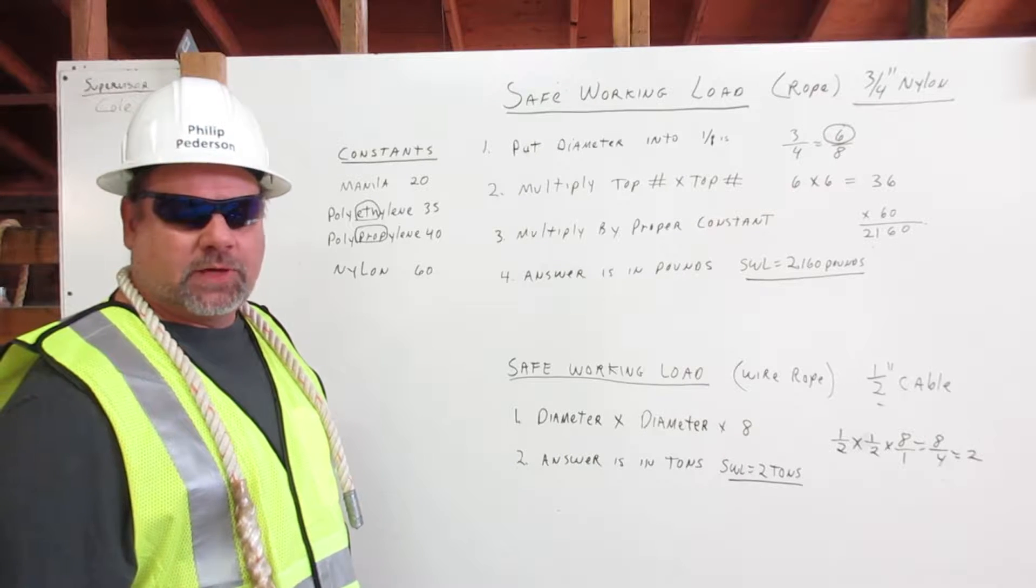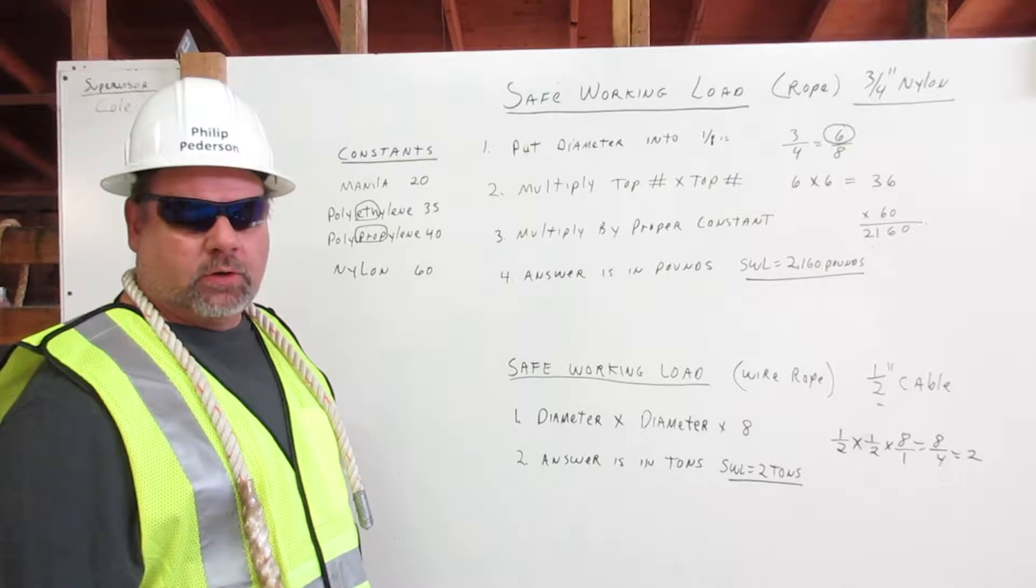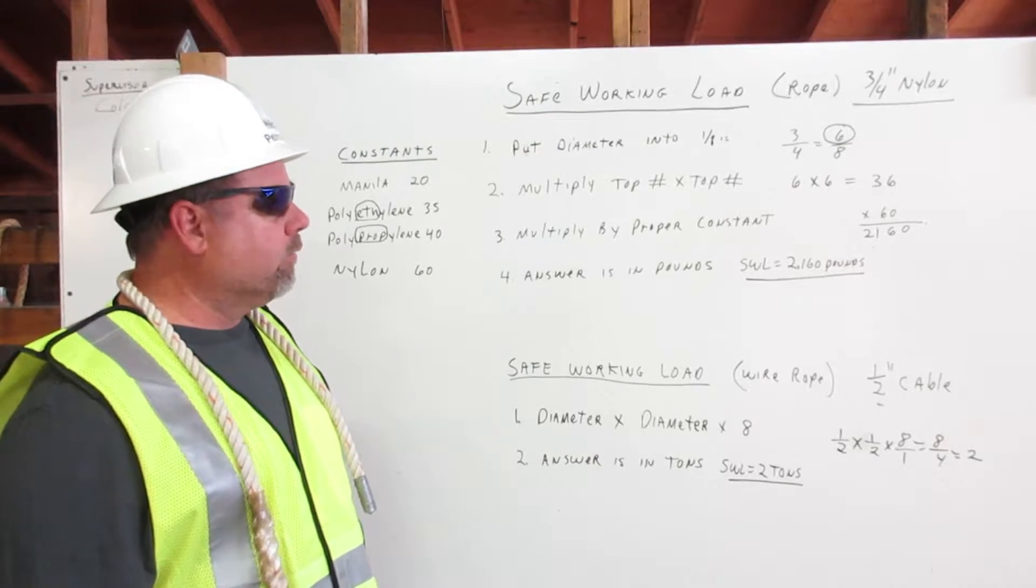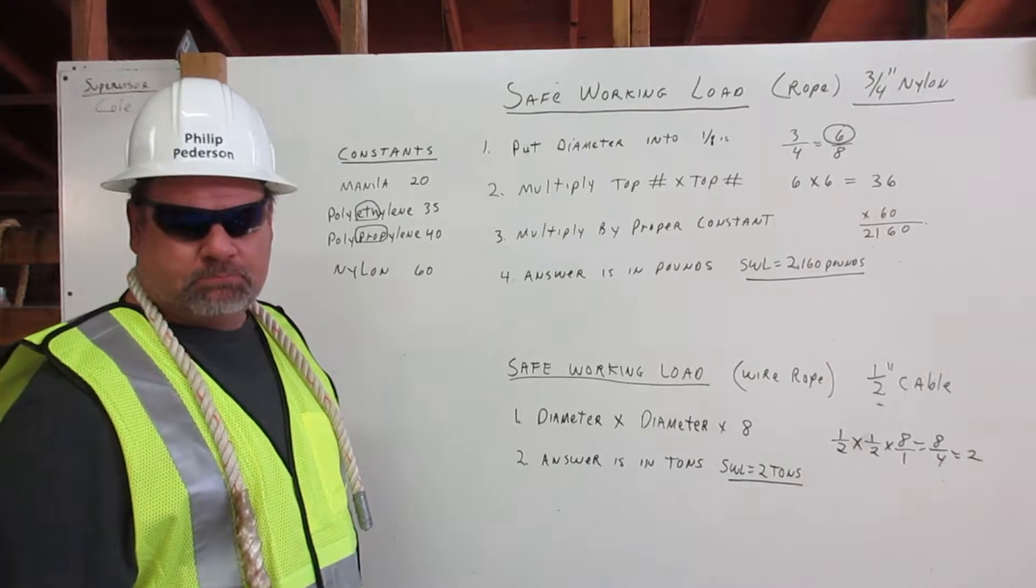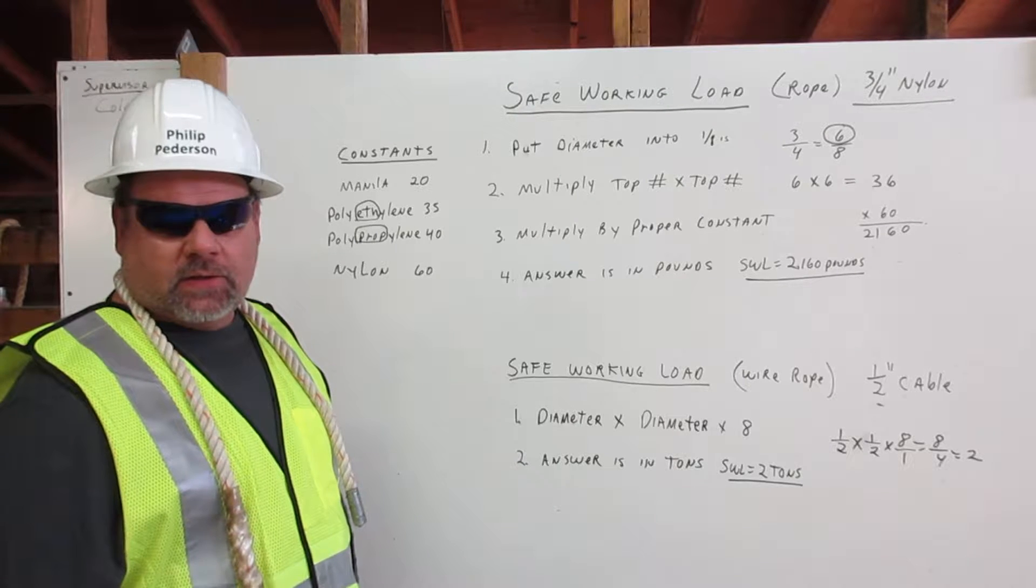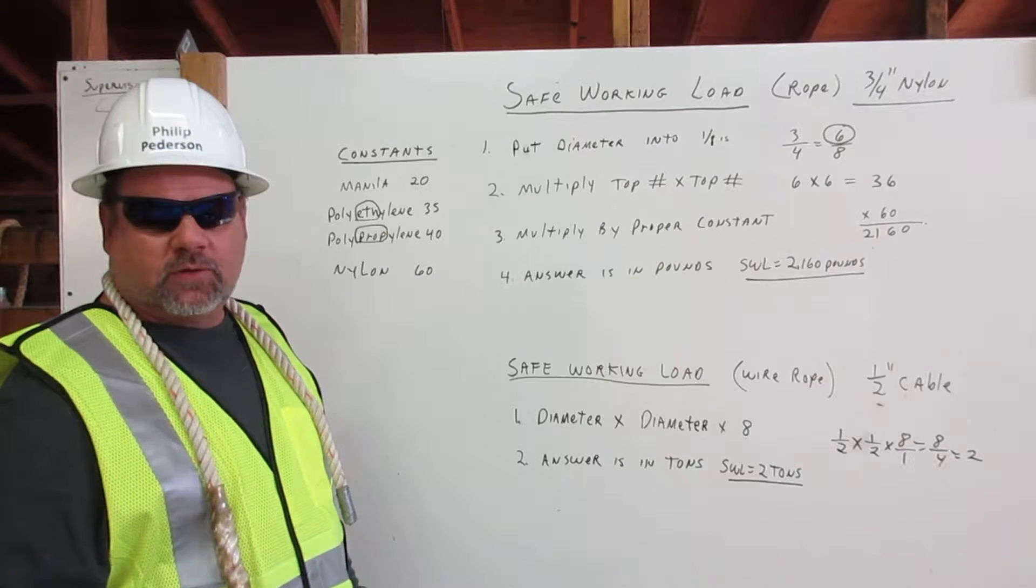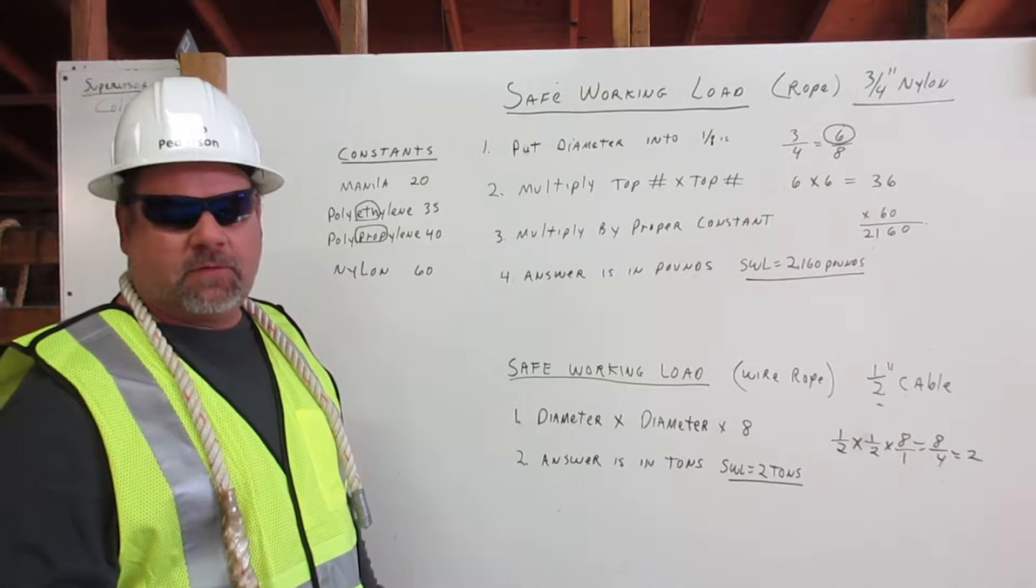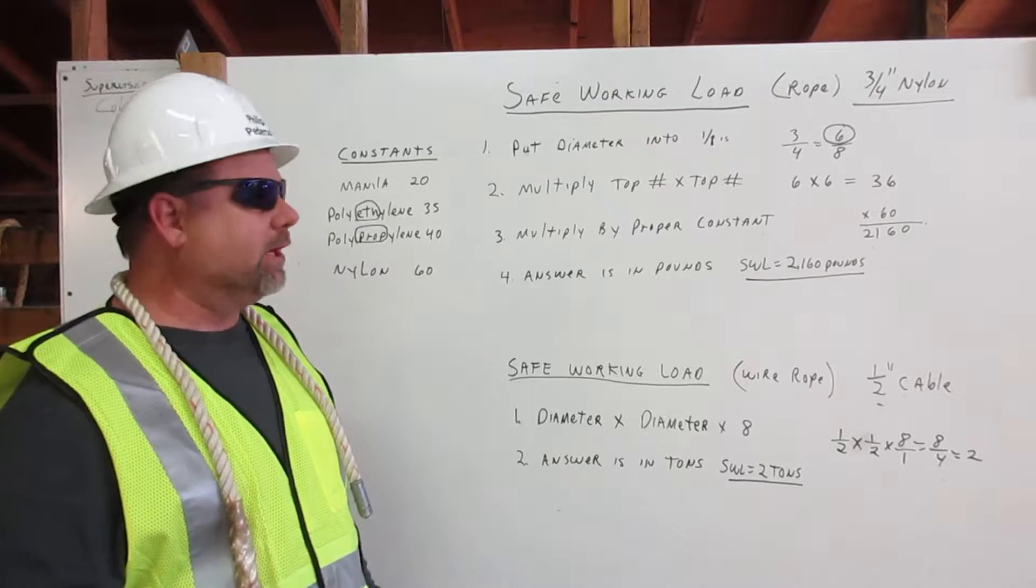I'm going to explain how to calculate the safe working load for wire rope and rope rigging. This safe working load is a number that represents one-fifth of the rigging's capacity.